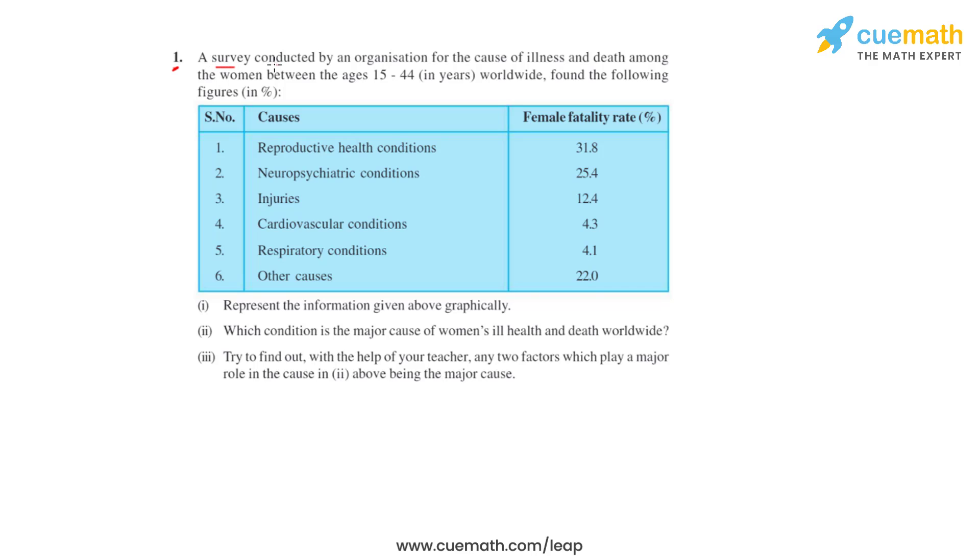Question number one says that a survey conducted by an organization for the cause of illness and death among women between the ages 15 to 44 years worldwide. From the following figures in percentage, this is the data that we have been given. We have been listed with different causes like reproductive health conditions, neuropsychiatric conditions, injuries, cardiovascular conditions, respiratory conditions, and other causes, along with the female fatality rate percentage associated with each of these causes.